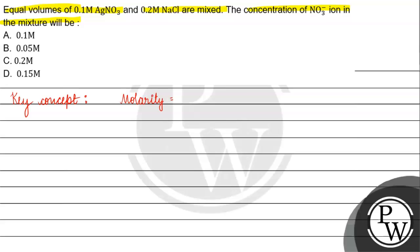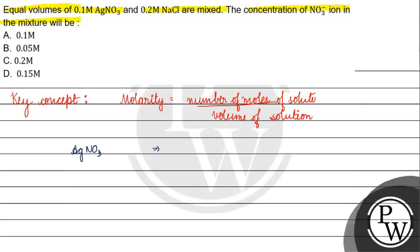This is basically number of moles divided by volume of solution. We have to talk about — when we talk about Hg(NO₃)₂, we have to consider the volume of Hg(NO₃)₂, which is the volume of the solution.